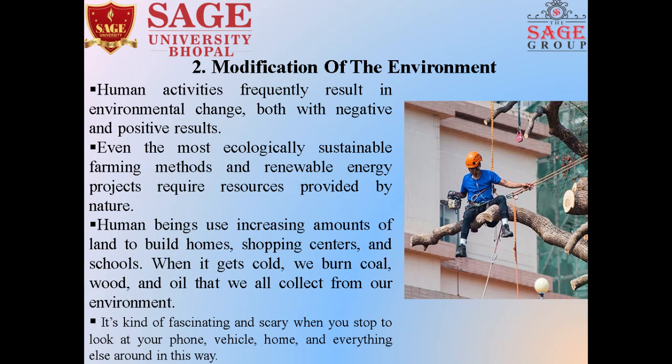Second, modifications of the environment. Human activity frequently results in environmental change, both negative and positive. Even the most ecologically sustainable farming methods and renewable energy projects require resources provided by nature. Human beings use increasing amounts of land to build homes, shopping buildings, and factories. When we extract coal, ore, and oil, we are all taking from our environment. So these are the key points of modifications of the environment.